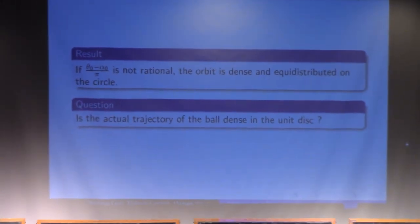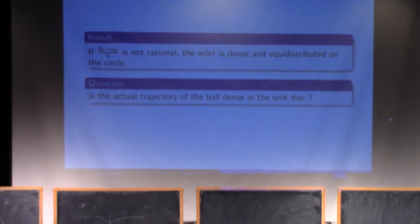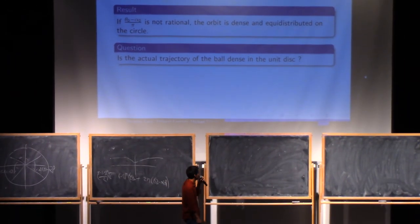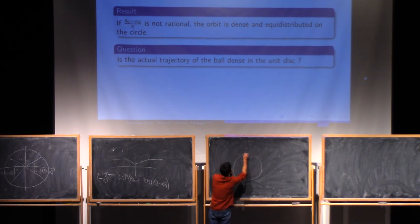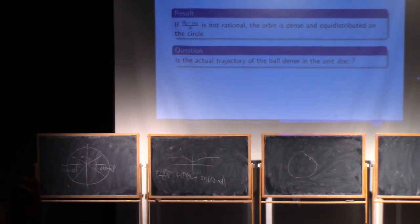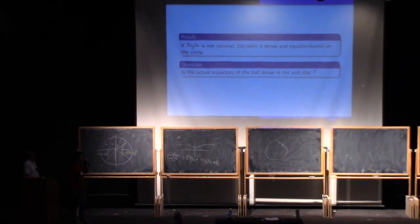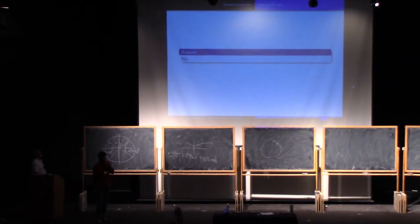But now we can try to look at the actual trajectory, because for the moment we just have a look at the position in which the ball hits the boundary, but we can try to draw the actual trajectory and ask, for example, whether the trajectory would be dense in the interior of the unit disc. That is my question. The answer is no.